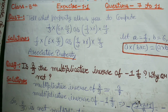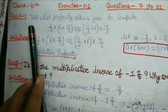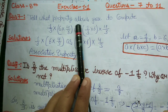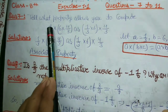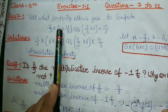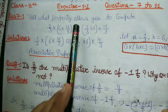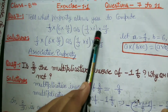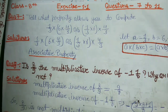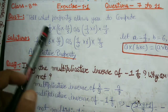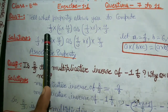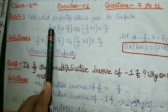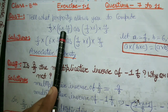So let's start. Question number 7 is: tell what property allows you to compute 1 upon 3 into 6 into 4 by 3, as 1 upon 3 into 6 into 4 by 3. Yeh expression humko diya wa hai — ismein kaun si property lagegi?